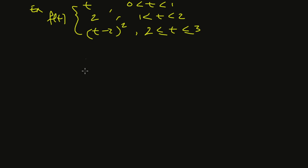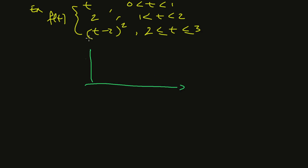If you sketch this from 0 to 3, you get a general idea of what happens: there's a line segment, then a jump, then a parabolic piece.